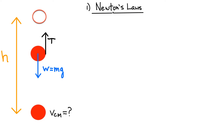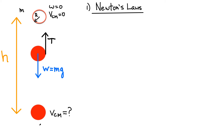Let's first look at this problem using Newton's laws. Initially I'm just going to drop the object, so the velocity of the center of mass and the angular velocity are both equal to zero. The yoyo has mass m and radius r. As it's dropping, the free body diagram shows it has a weight mg pulling down, and there's also a tension acting at the edge — that's where the rope is — and the string is pulling up on it. After the yoyo drops a certain height h, we want to know how fast the center of mass is moving.